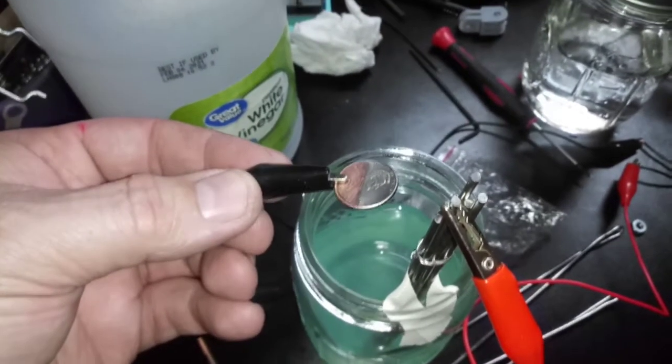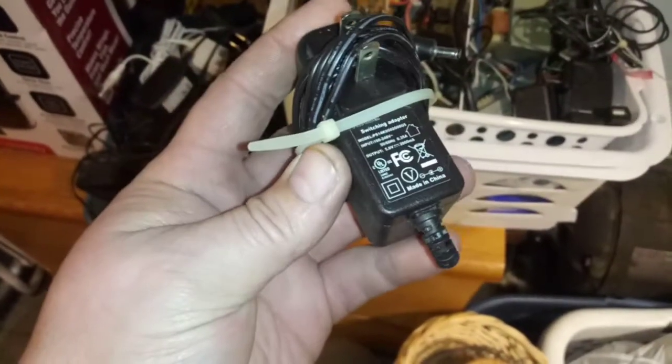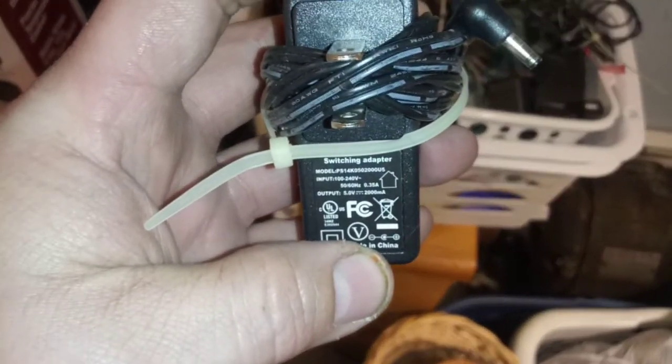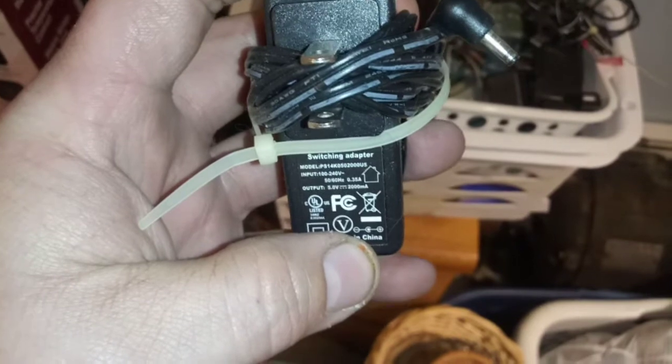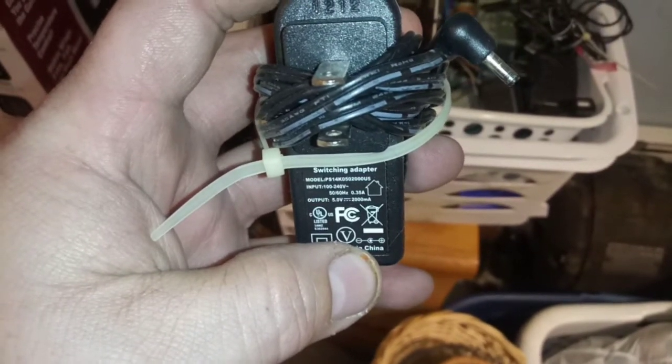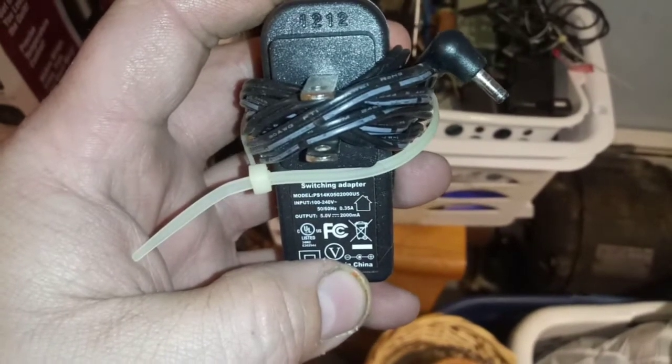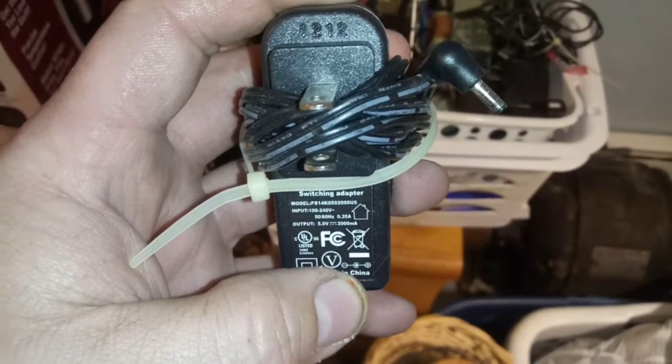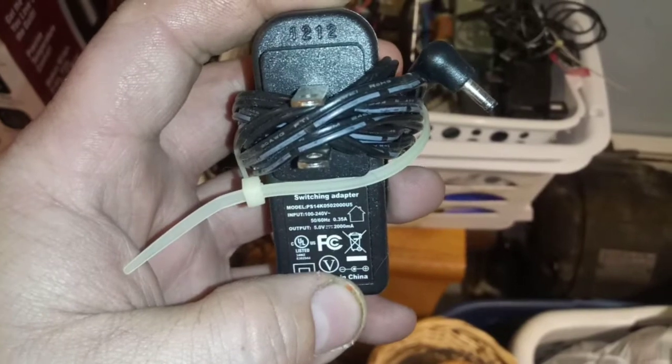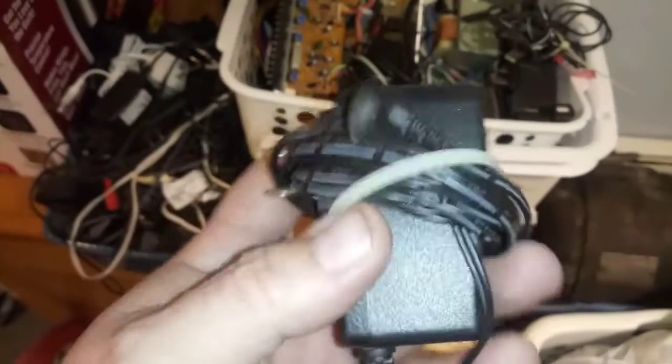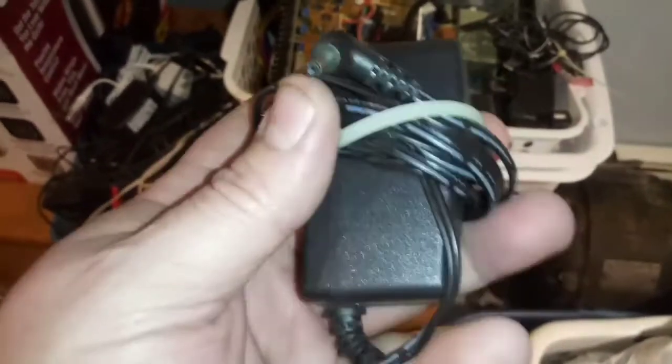Alright, this is what I came across. 5 volts, 2,000 milliamp, which I believe is 2 amps approximately. So, 120 volts in, 10 volts, whatever, 0.35 amps in, and you get your 0.52 amps out. Alright, this will do the trick.